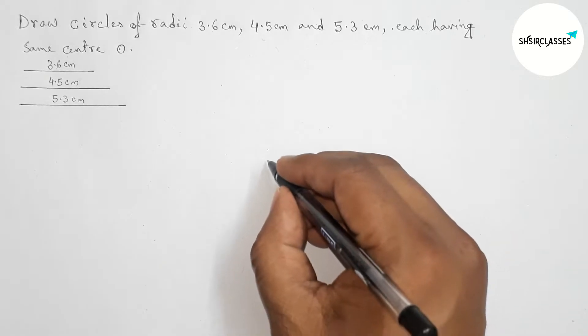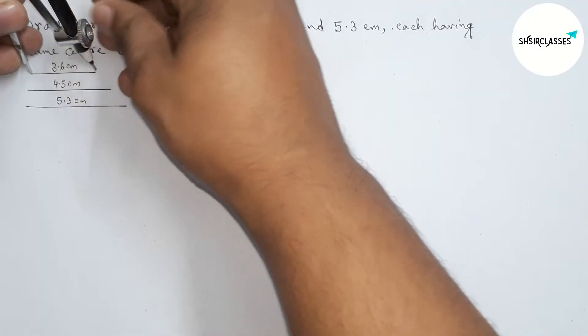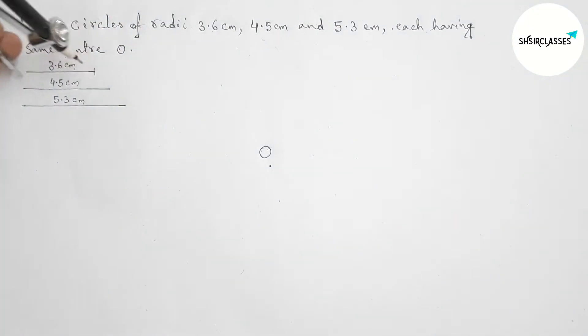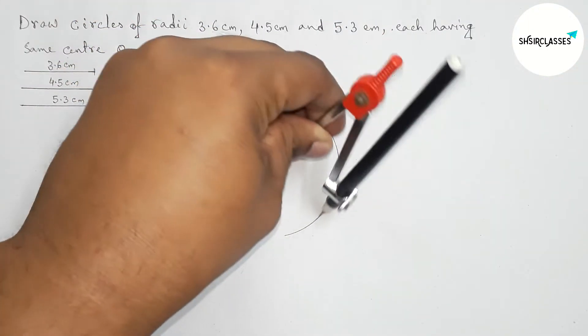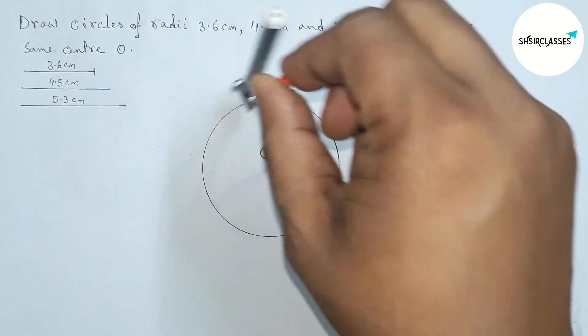Now taking any point, so first marking here point O. Next, taking 3.6 centimeters with the help of compass perfectly. Now putting the compass on point O as center and drawing a circle.